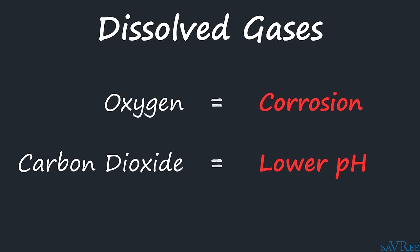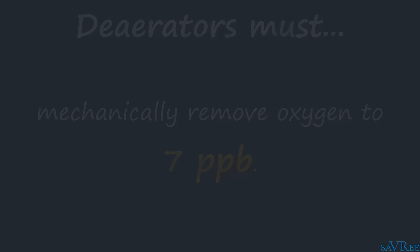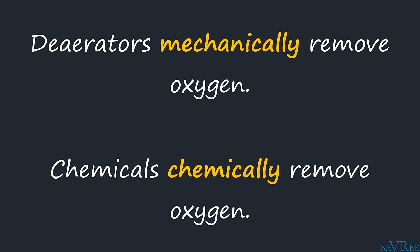In order to protect our boiler and many of the associated components including piping and valves, we need to remove as much oxygen and CO2 from the boiler feed water as possible. A typical deaerator will be designed to mechanically remove oxygen down to a level of about seven parts per billion. Any oxygen that remains after being stripped by the deaerator will be removed chemically. These oxygen scavenging chemicals are typically sodium sulfite and hydrazine.